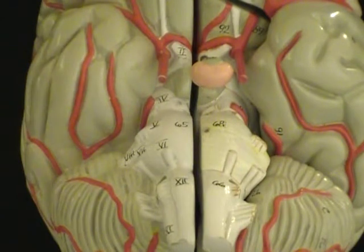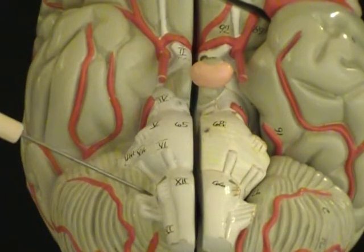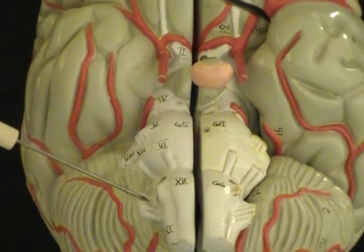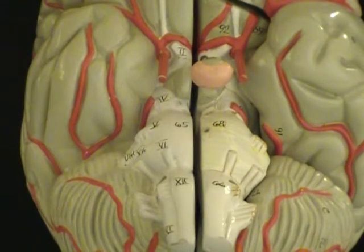Cranial nerve number nine, if we come up here on the top, we see cranial nerve number nine, just lateral to the medulla. Number nine is the glossopharyngeal nerve.